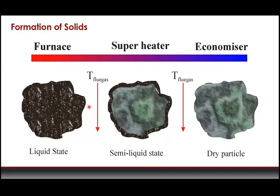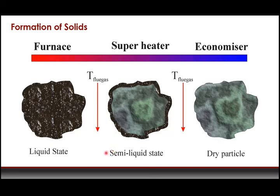In the furnace, you're more likely to have liquid or semi-liquid deposits forming on surfaces, because that's where temperatures are highest and combustion is occurring — so it's more likely that inorganic deposits are above their eutectic melting point and will be liquid or semi-liquid. Away from the furnace in the superheater area, temperatures are a little lower, so deposits there are more likely to be semi-liquid. The economizer has even lower temperatures, which is why deposits formed in that area tend to be characterized as dry particulate forms.